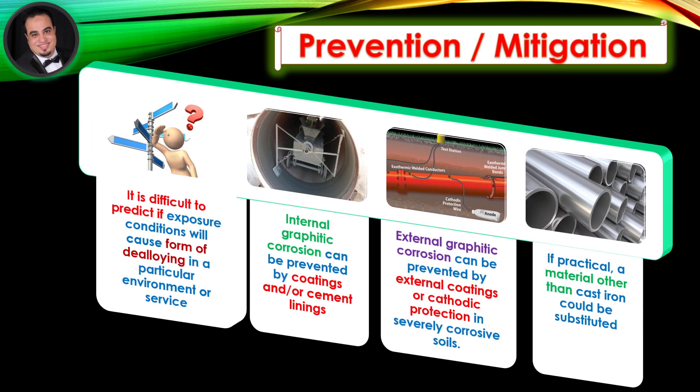Prevention and mitigation: It is difficult to predict if exposure conditions will cause this form of dealloying in a particular environment or service. Internal graphitic corrosion can be prevented by coatings and/or cement linings. External graphitic corrosion can be prevented by external coatings or cathodic protection in severely corrosive soils. If practical, a material other than cast iron could be substituted.